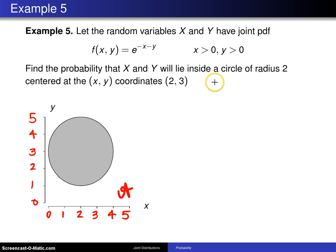The formula for a circle is x minus h squared plus y minus k squared equals r squared. So that particular circle is this shaded one right here. It is centered at 2, 3 and has a radius of 2.